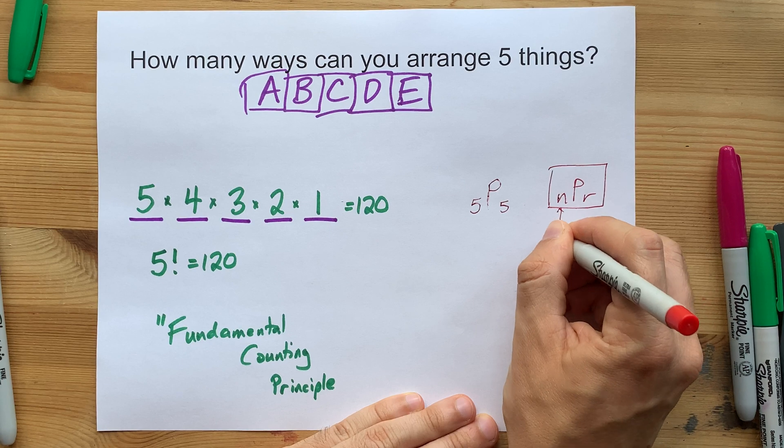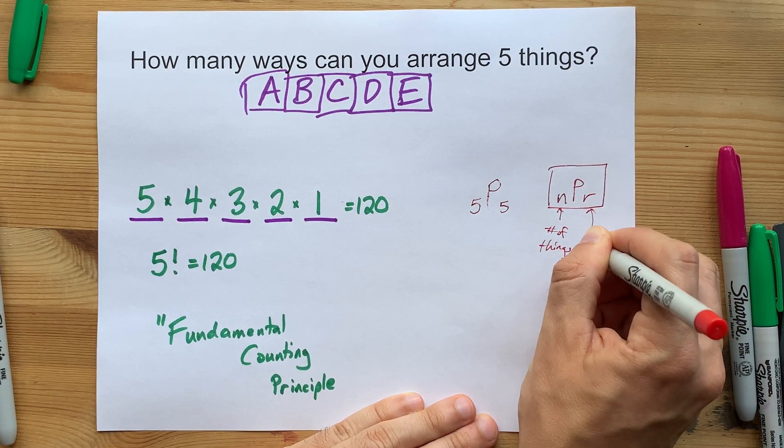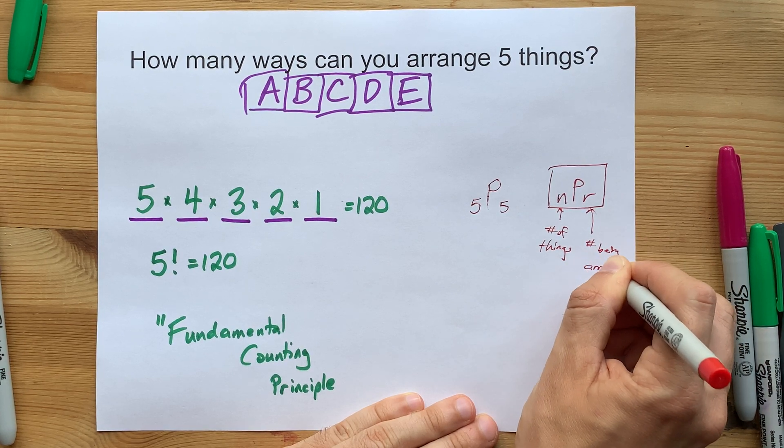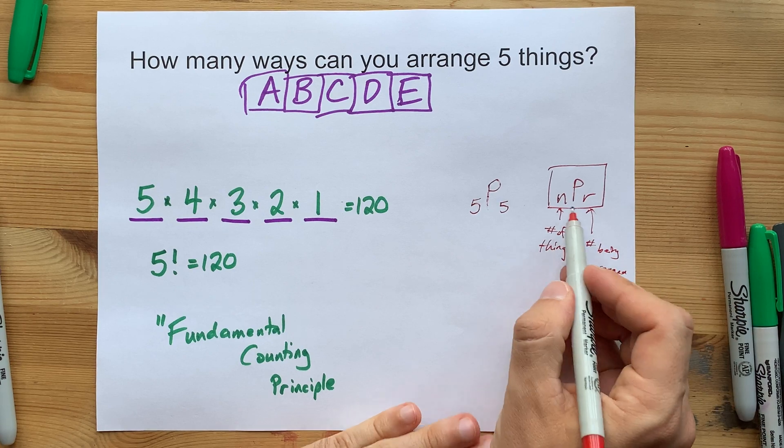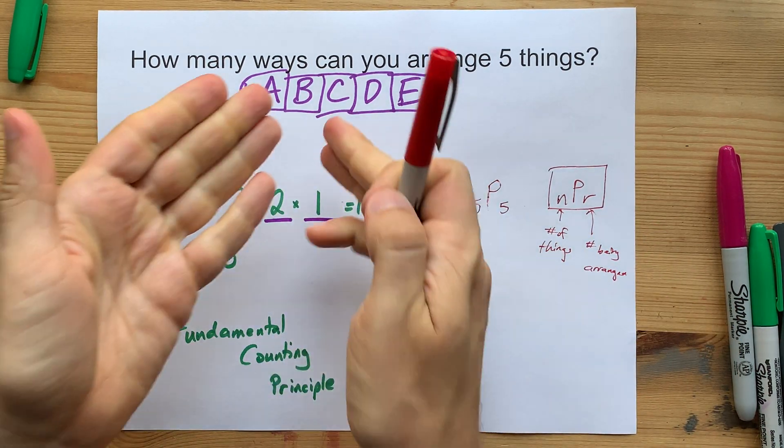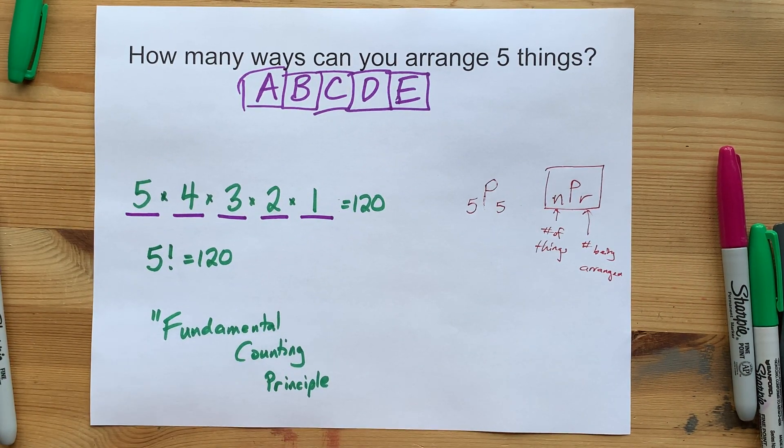N is the number of things that you have, and R is the number that are being arranged. It's useful in that sometimes R is not the same as N.